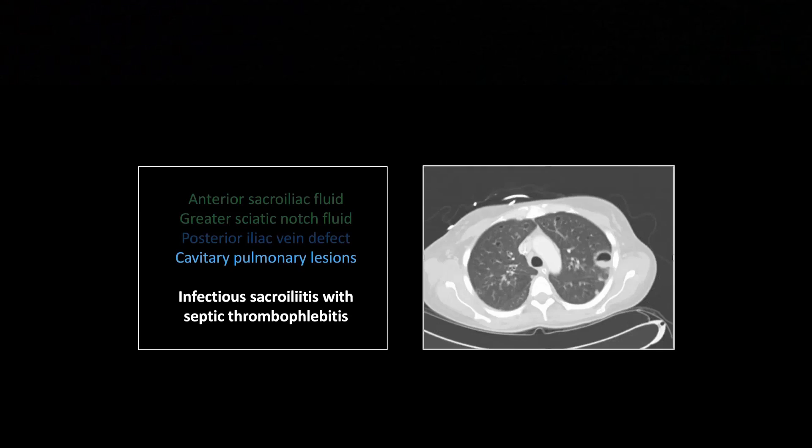We have peripheral subpleural cavitations — the classic finding of septic emboli. When you see bilateral cavities up against fissures and pleural surfaces, definitely start thinking septic embolization. They're not all going to be peripheral — that's not an absolute rule — but I like to see at least one or two notably peripheral before I really come down hard on it.